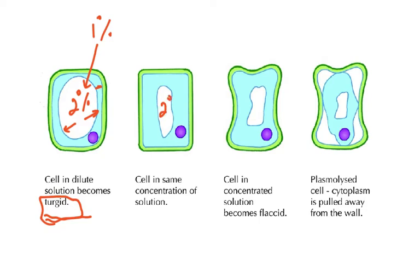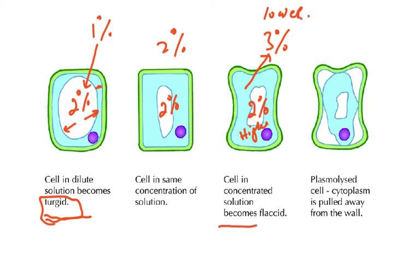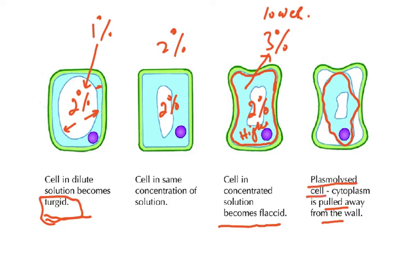If the cell is in the same concentration — say 2% inside and 2% outside — the cell is in equilibrium and there is no net movement of water molecules. When placed in a concentrated solution — 2% inside and 3% outside — water moves out from a region of higher water potential to one of lower water potential. The cell becomes flaccid, and if further water is lost, the cytoplasm pulls away from the cell wall — this is a plasmolyzed cell.